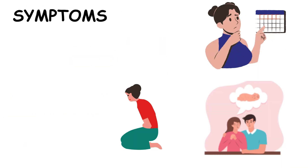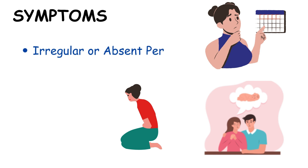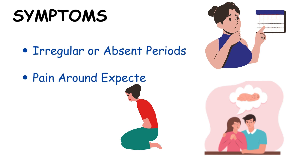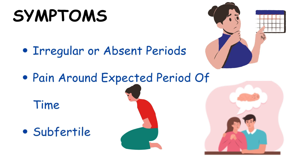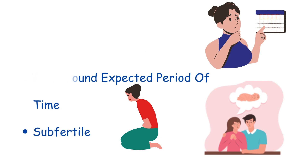Women with Asherman's syndrome may experience symptoms such as irregular or absent periods and pain around the expected period of time, making them subfertile.